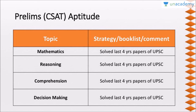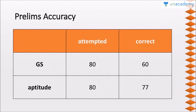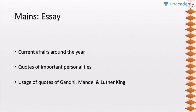My prelims accuracy was 60 correct out of 80 in GS and 77 in aptitude. Coming to mains — essay preparation: I followed current affairs throughout the year and did not prepare essay specifically. I just read a few quotes the day before the exam, which was more than enough. If you think you are weak in writing, then you should practice essays, of course.